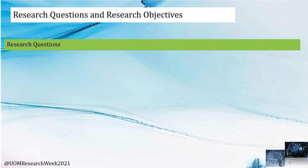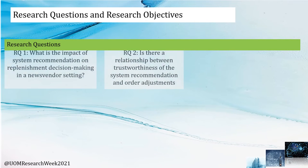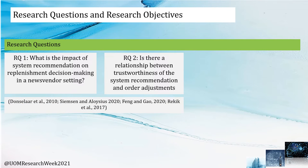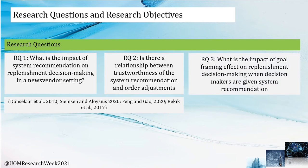Moving to research questions and research objectives. Our first research question is: what is the impact of system recommendation on replacement decision making in a newsvendor setting? The second research question is: is there a relationship between trustworthiness of the system recommendation and order adjustments? Our third research question is: what is the impact of goal framing effect on replacement decision making when decision makers are given system recommendations?